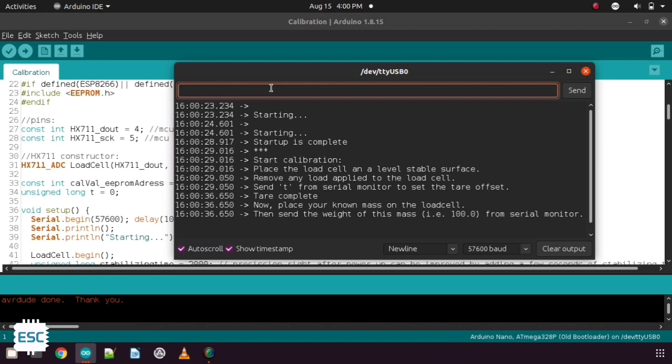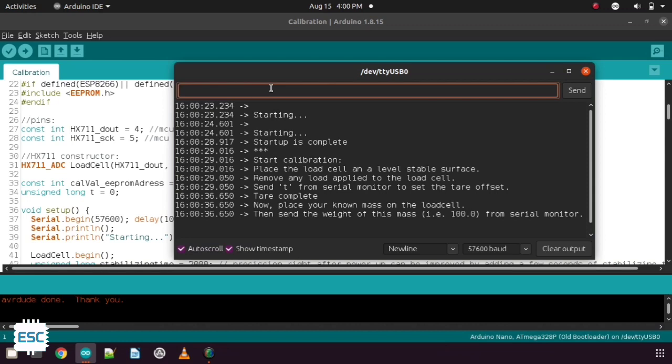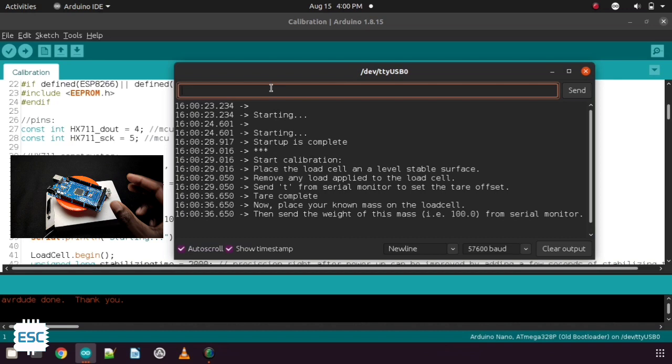Then place a known weight. Currently I don't have any weight blocks. So I placed an Arduino Mega because I got the weight of Arduino Mega by googling. Now enter the weight in my case that is 37 gram.